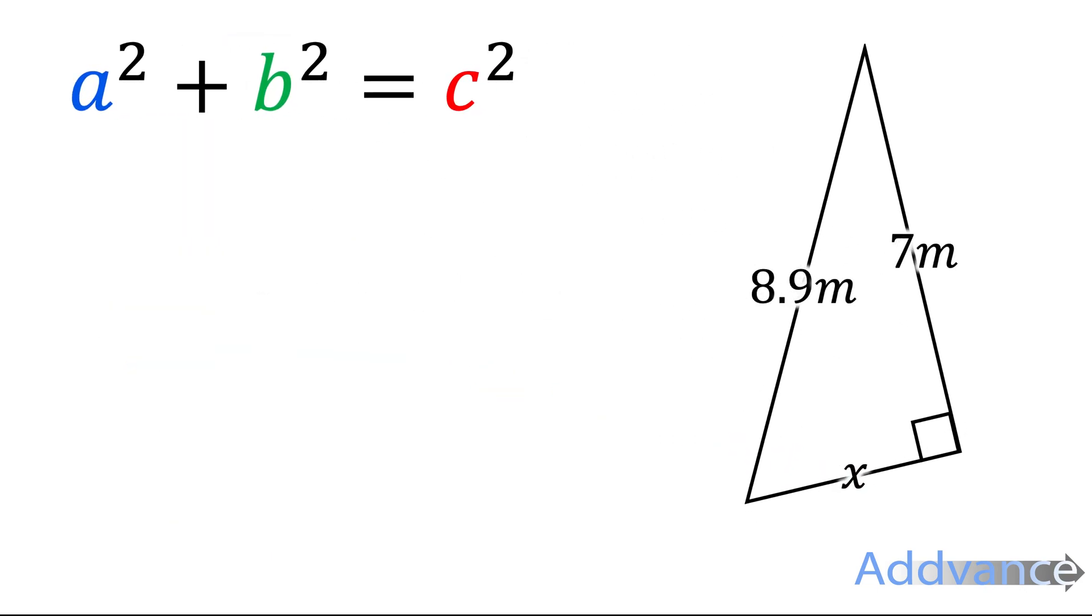Now we have another question here, and we have one side is 8.9 metres, another side is 7 metres, and we want to find the other side. So we start by labelling the sides A, B and C. Like this. A, B and C.